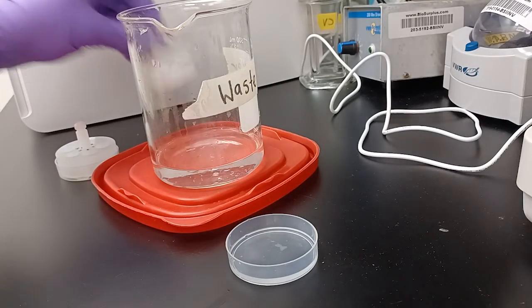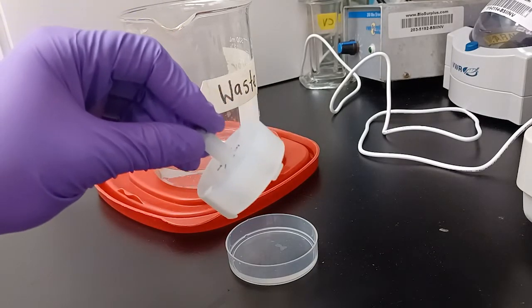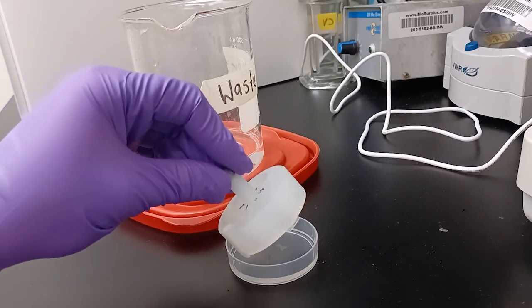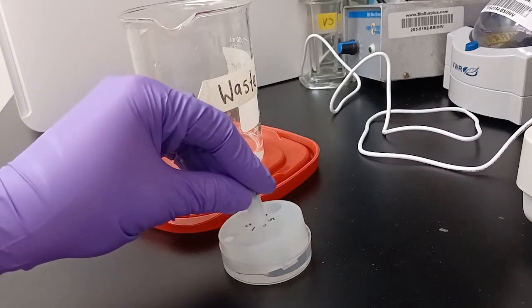Once you have PBS in a basin, lower the netwell insert in at an angle to prevent air bubble formation. Do this for all three netwells.